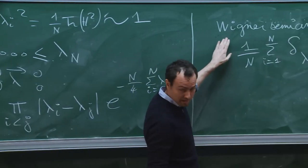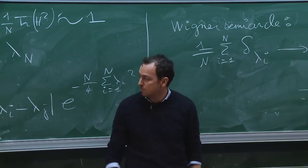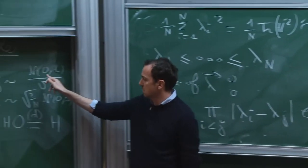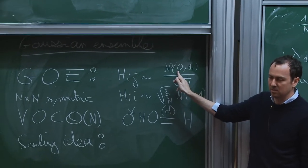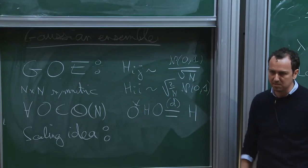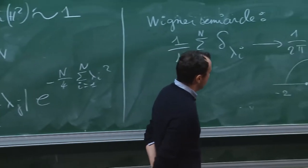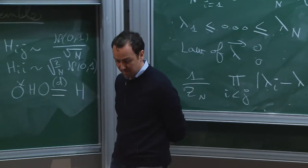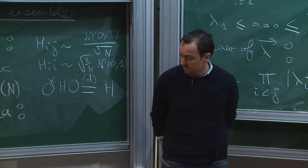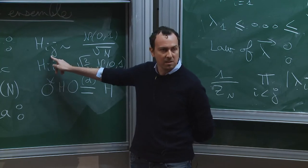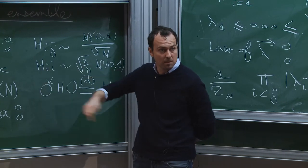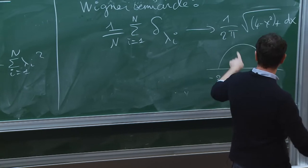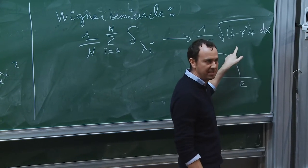Wigner's contribution goes way beyond that. He actually proved that this convergence holds even if you don't have Gaussian entries. Any standard normalized random variable with high enough moments works here, and he did it by the method of moments. The moments characterize the limiting spectral measure. You can take the traces of high powers of H, you end up with a counting problem like counting some paths, and you have some Gaussian moments involved. You will find out that it converges to the moments of this measure, which are the Catalan numbers.